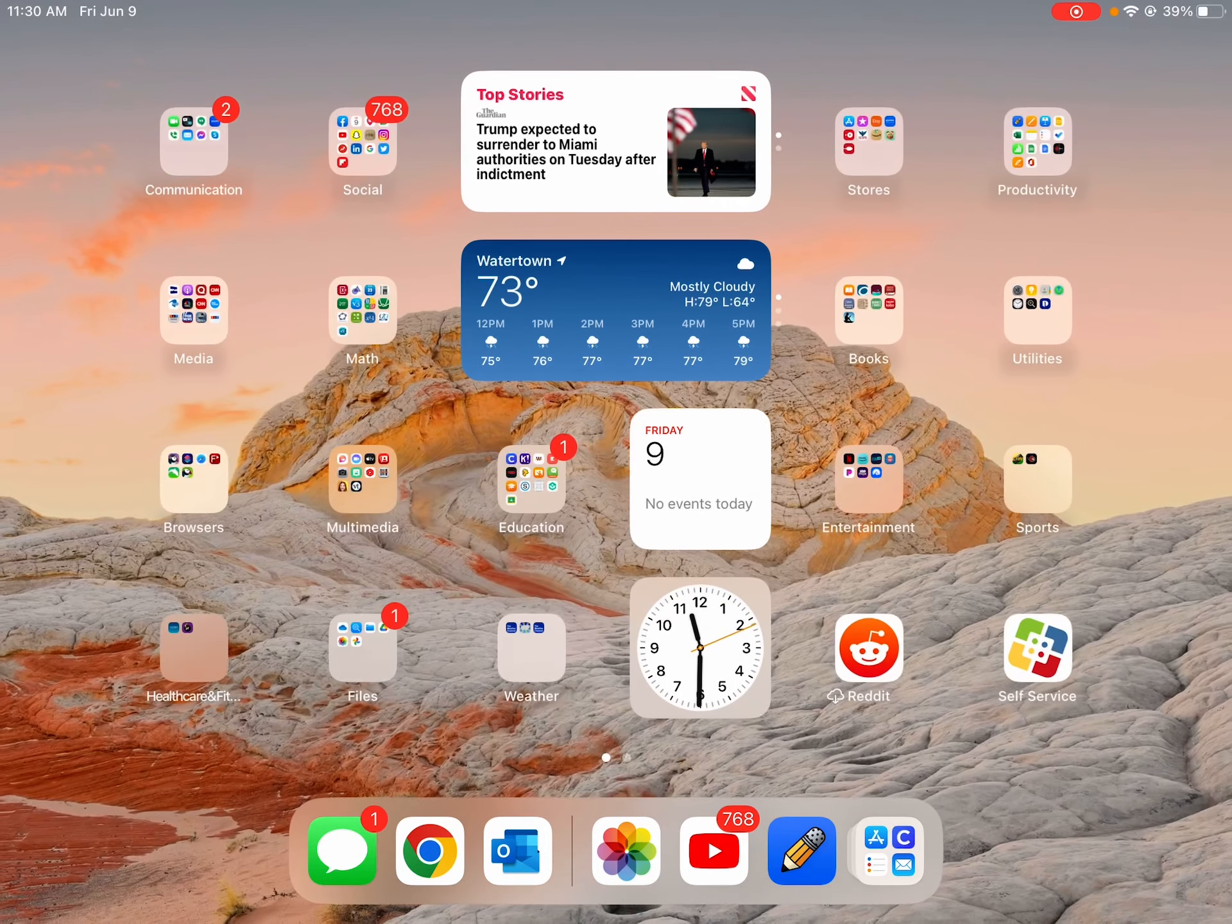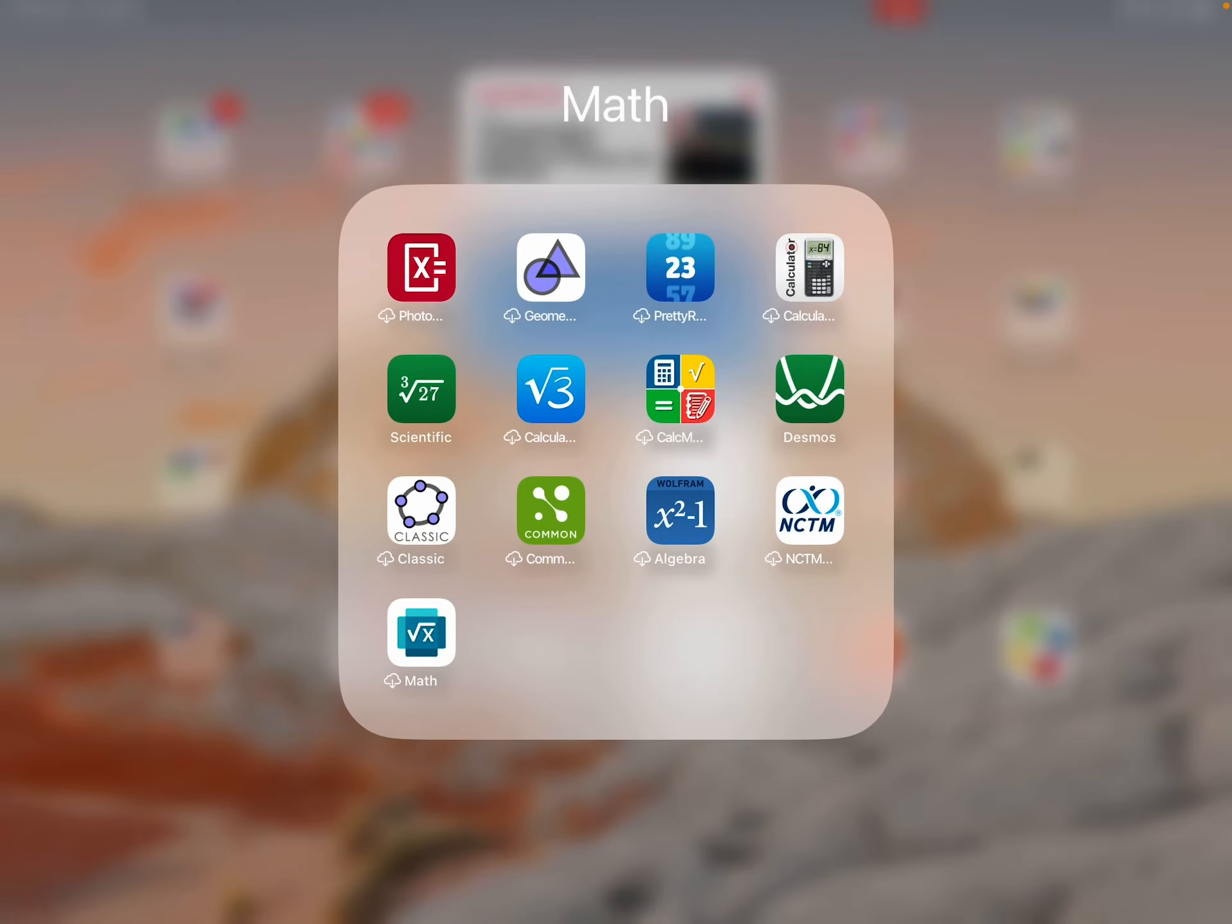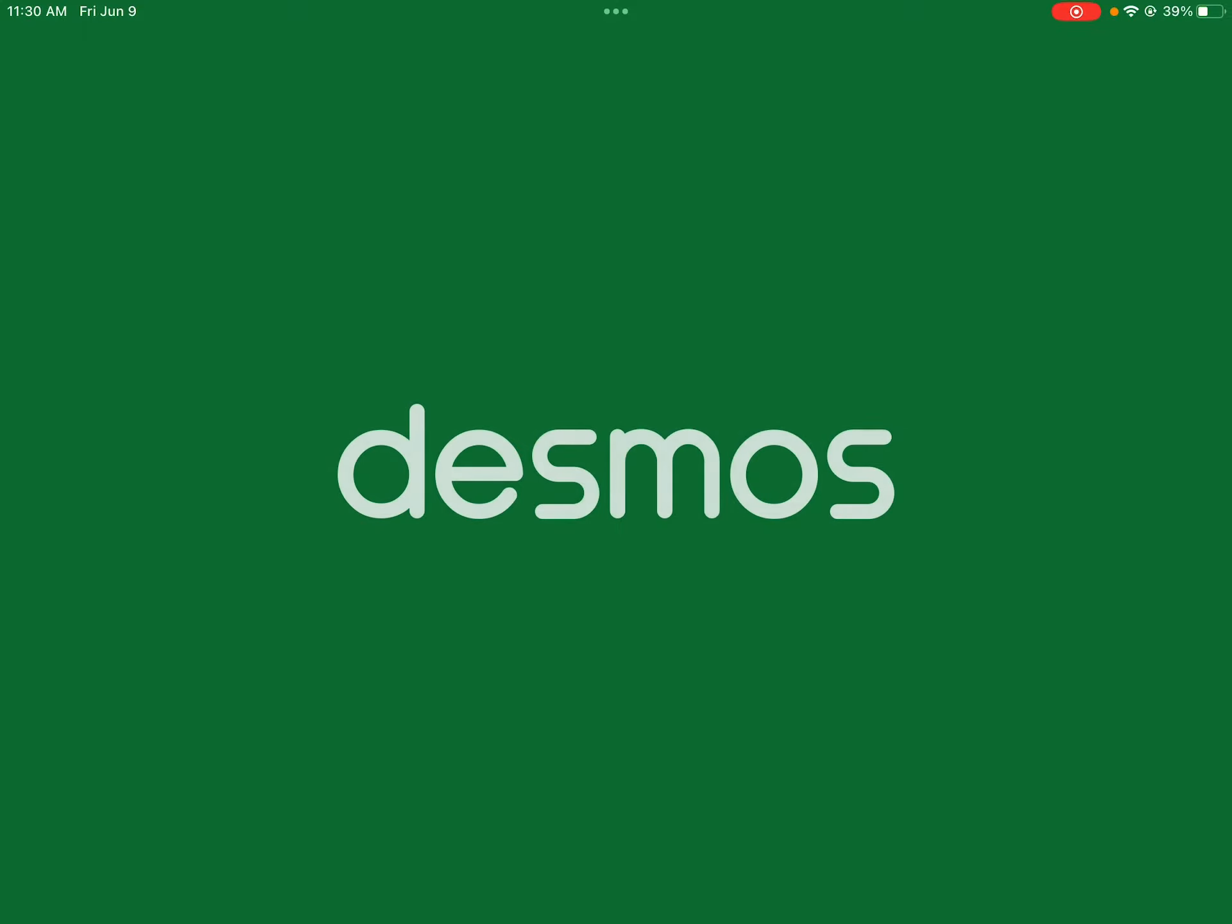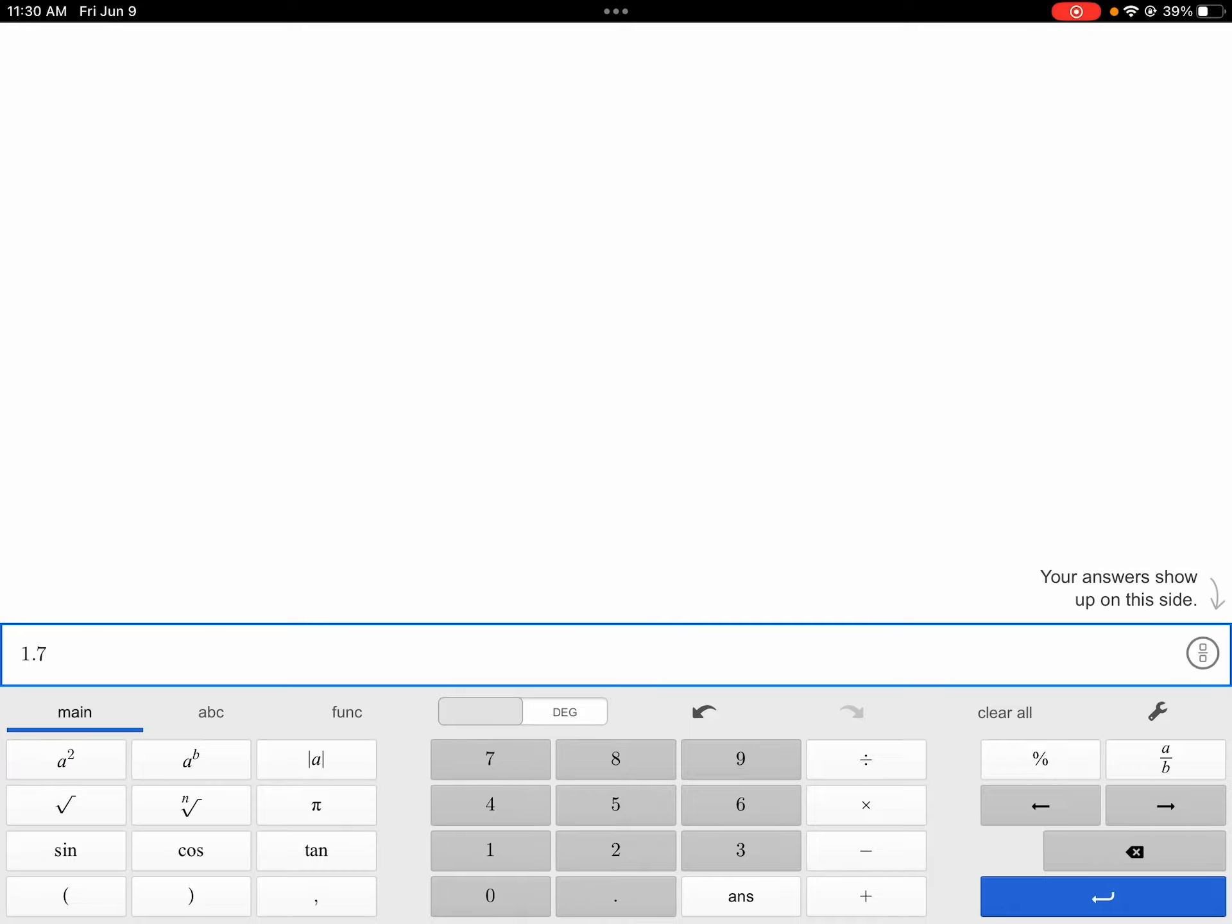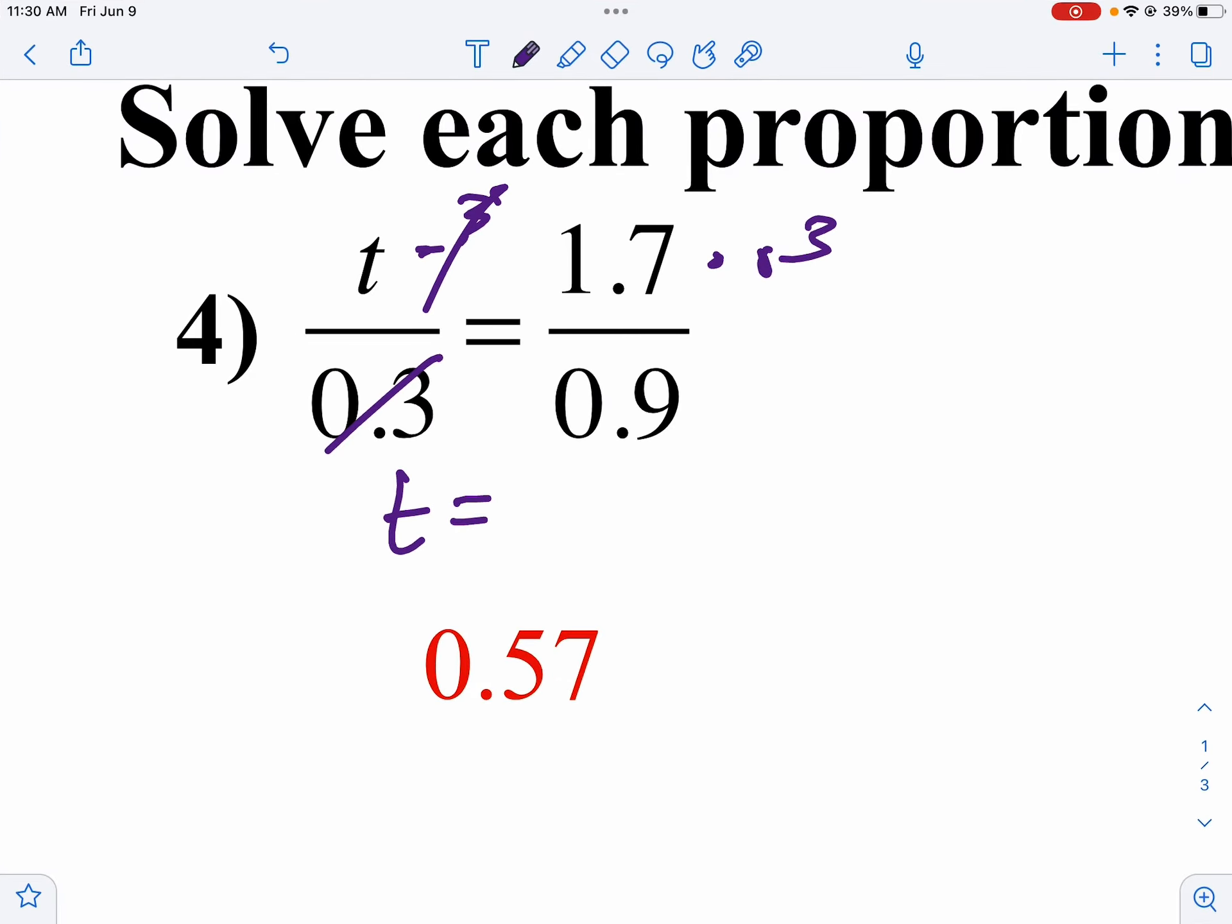Let me get my calculator open. So we take 1.7 times 0.3 and divide that by 0.9. And you get about 0.57. And that's our answer.